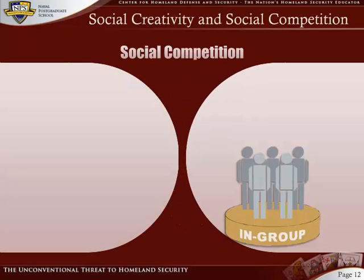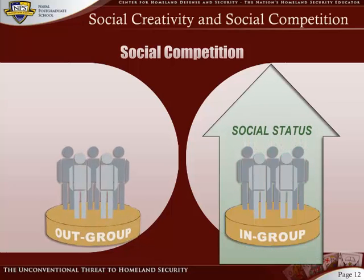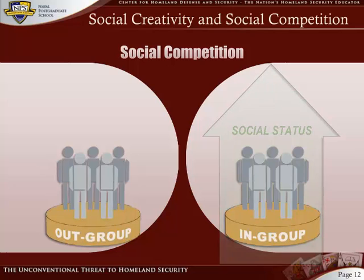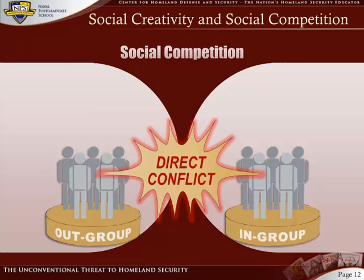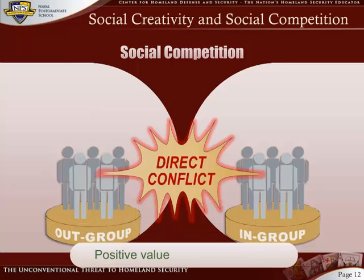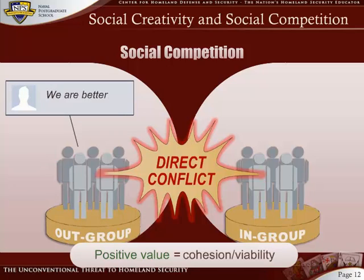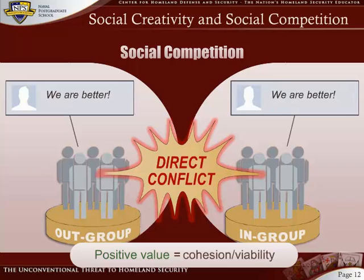In contrast, social competition refers to a subordinate group's effort to improve its actual social status in relation to the dominant group. This means intensifying the competitive relationship by engaging the out-group in direct conflict. Since each group's ability or inability to provide its members with positive value directly determines a group's cohesion and viability, they will struggle against negative comparison in order to maintain membership and avoid disintegration. Without members, there is no group. And without a group, there is no possibility of pursuing the group's ideological goals.